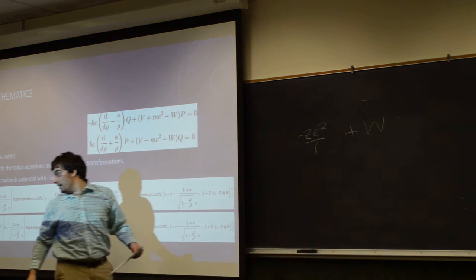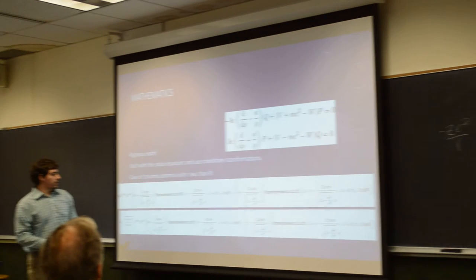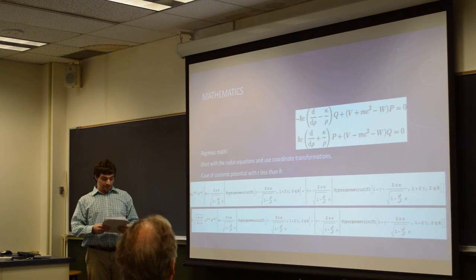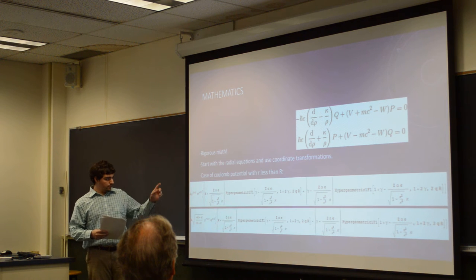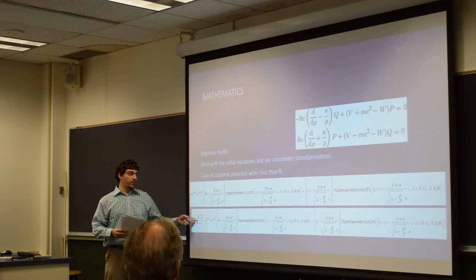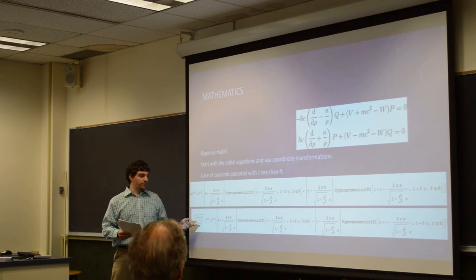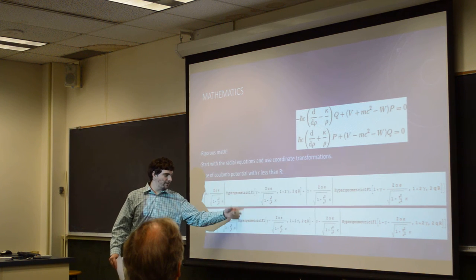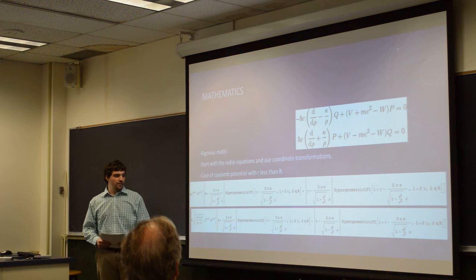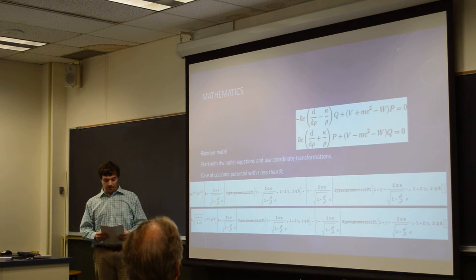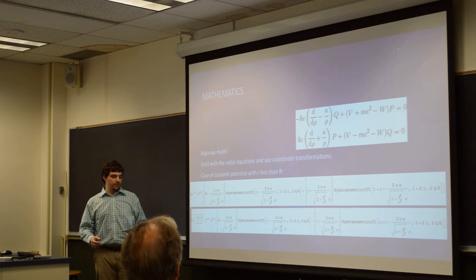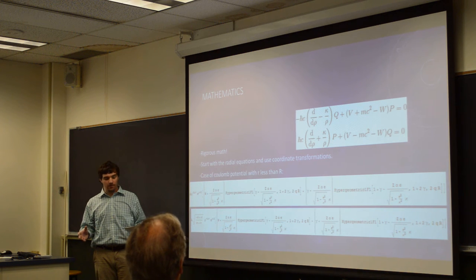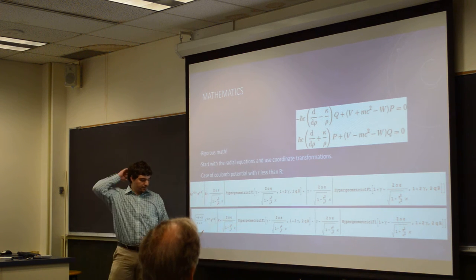Not going through all the steps to find a solution, you end up getting these two coupled equations which you can tell are very long. You end up getting what's called confluent hypergeometric functions, and their solutions to a certain type of equation called the Kummer equation. It's a certain type of differential equation.